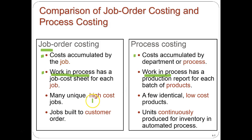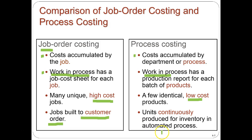Job order costing generally involves many unique, high-cost jobs — things that are different in nature and often larger. Process costing, on the other hand, involves a few identical, low-cost products. In job costing, jobs are built to customer order — construction projects, CPA firms, and law firms all customize their output and track by job. In process costing, units are continuously produced for inventory in an automated process, like oil or paper refining.